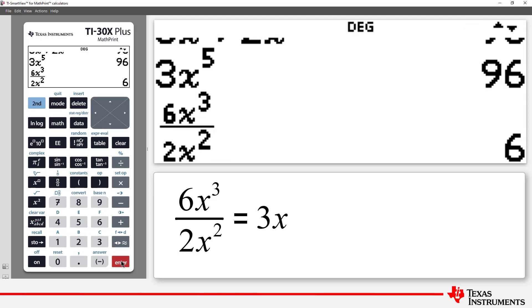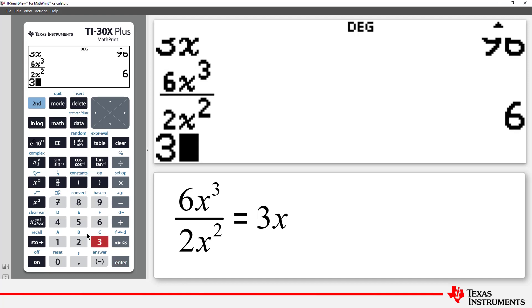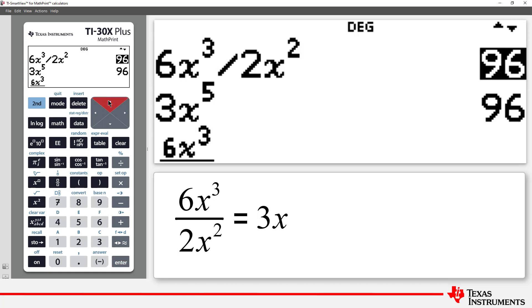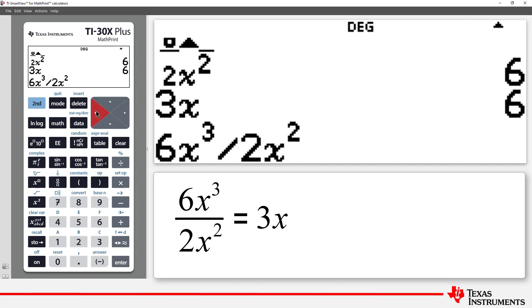The vinculum literally divides the expression into two parts: the numerator divided by the denominator. The vinculum effectively puts parentheses around the 2x squared in our original expression.